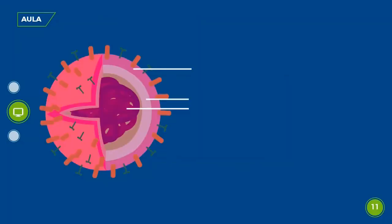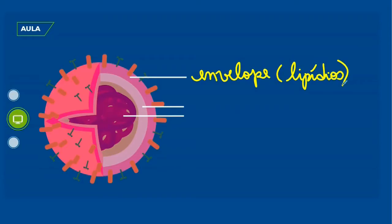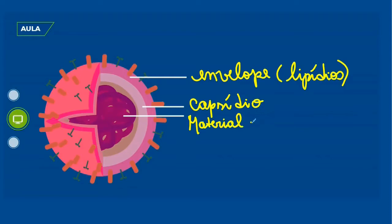Na próxima cartela, vamos visualizar um vírus envelopado. Esse envelope membranoso normalmente pode ser formado por lipídios. E de onde vem esse envelope? Pode vir de membranas de células que esses vírus invadiram. Por dentro do envelope, temos o capsídeo, que é essa estrutura formada por proteínas, que vai estar ali para proteger o material genético — que tanto pode ser DNA quanto RNA.